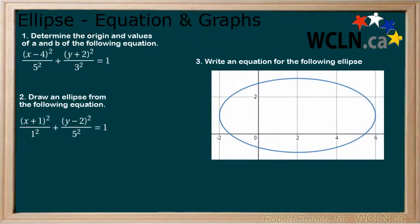Take a look at the following questions and attempt each. Press pause, and when you're ready for the solution, press play. Determine the origin and values of a and b from the following equation. By comparing to the standard form of the equation, we can see that our origin is at the point 4, negative 2, and that a equals 5 and b equals 3.